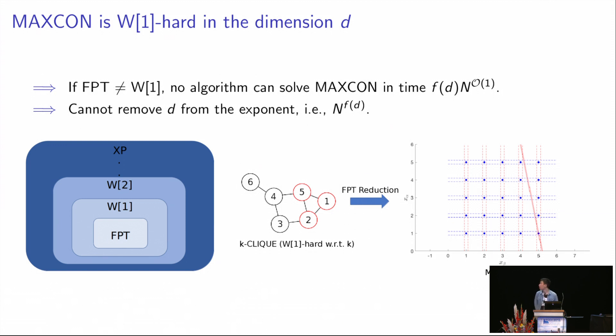Unfortunately, we prove that this is unlikely to be true. We show that MAXCON is actually W1-hard in the dimension D. By using the standard assumption that FPT is not equal to the class of W1, which is similar to the assumption that P is not NP, then MAXCON is in the class of W1 but not in the class of FPT. This tells us that we cannot hope to remove the dimension D from the exponent of the number of points in the runtime. And this result is proved by performing FPT reduction from the K-clique problem to the MAXCON problem, where K-clique problem is W1-hard in the value K.